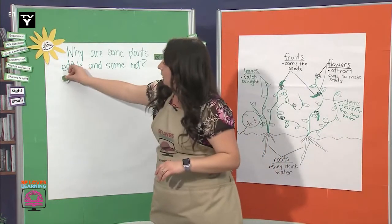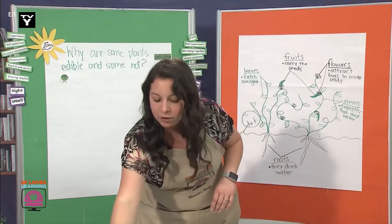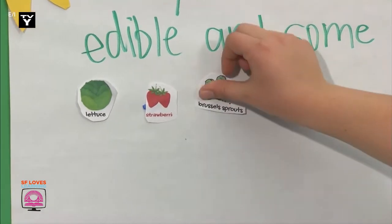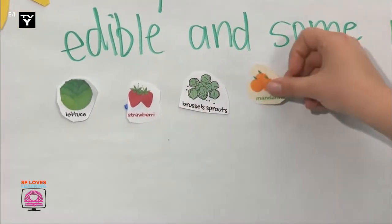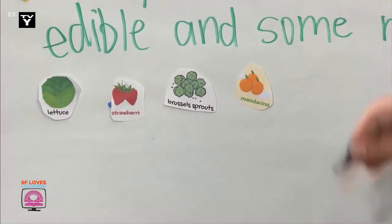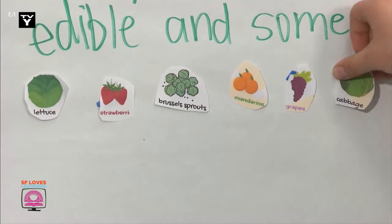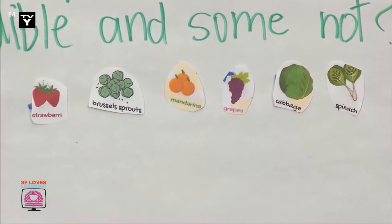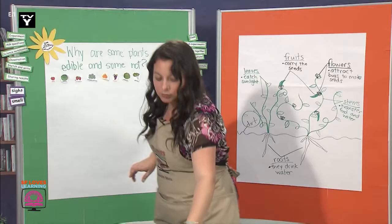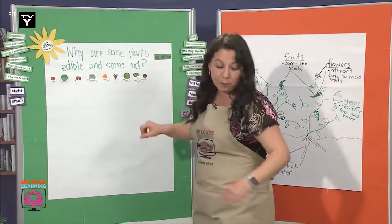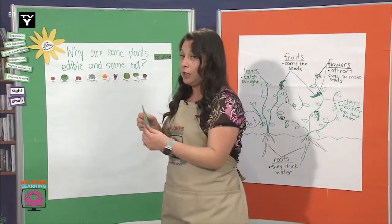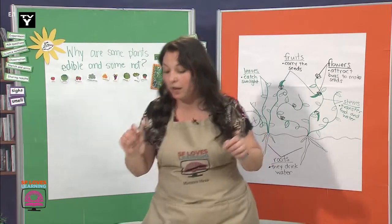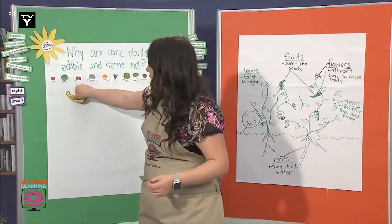I have lettuce, really little lettuce, strawberries, Brussels sprouts, mandarins, grapes, cabbage — which is different from lettuce — spinach, a little apple, watermelon, and I found a picture of something that I have seen a lot of students eat: sour grass. And our categories are going to be fruits and leaves.